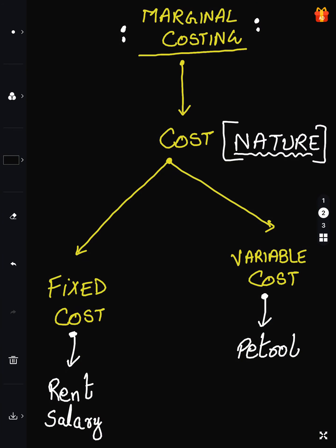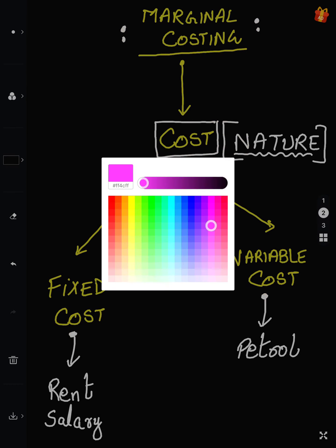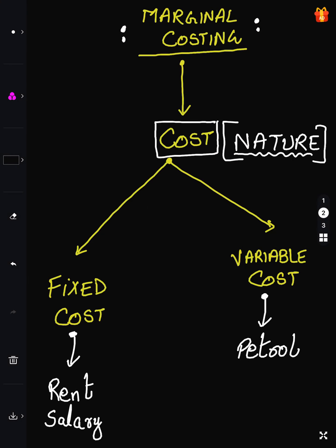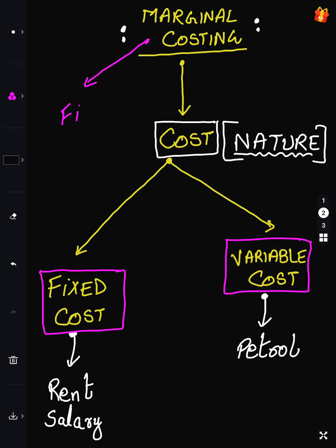What is marginal cost? In marginal costing, the objective is per unit costing. Marginal costing people classify cost into only two things: either fixed cost or variable cost. That's it. They don't distinguish between anything else.